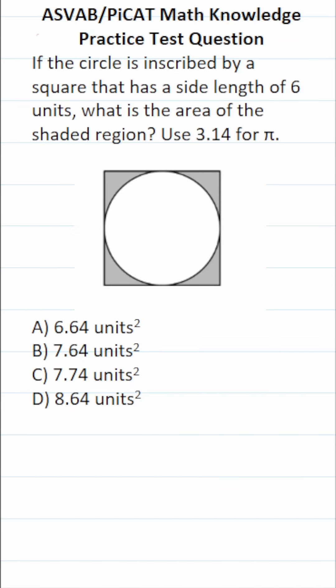This math knowledge practice test question for the ASVAB and PiCAT says, if the circle is inscribed by a square that has a side length of 6 units, what is the area of the shaded region? Use 3.14 for pi.